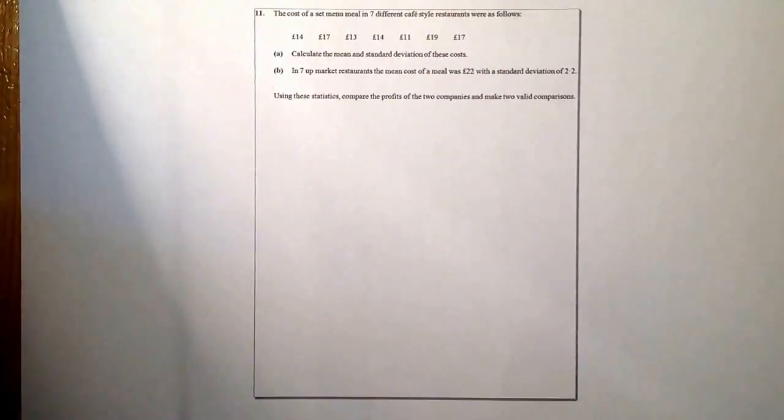Part B looks like we're going to compare some data. In seven upmarket restaurants, the mean cost of a meal was £22 with a standard deviation of £2.2. Using these statistics, compare the prices of the two groups and make two valid comparisons. So let's go ahead and start this question.